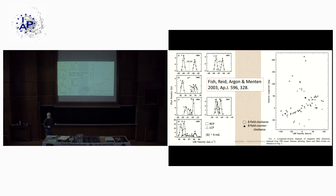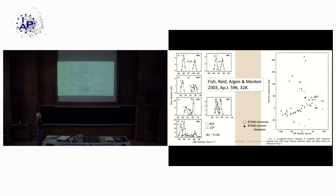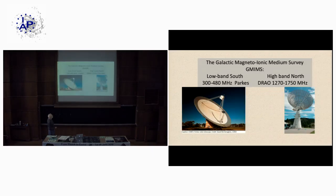Where Zeeman splitting is easier is in masers, because masers often have quite strong fields and very strong lines. Mark Reed and collaborators made a longitude-velocity diagram of the B field strength and direction, where open circles are the B field going clockwise around the Milky Way and solid circles are counterclockwise. Now let me move on to the GMIMS survey. The GMIMS survey is a group of surveys in both hemispheres at high and low frequencies.